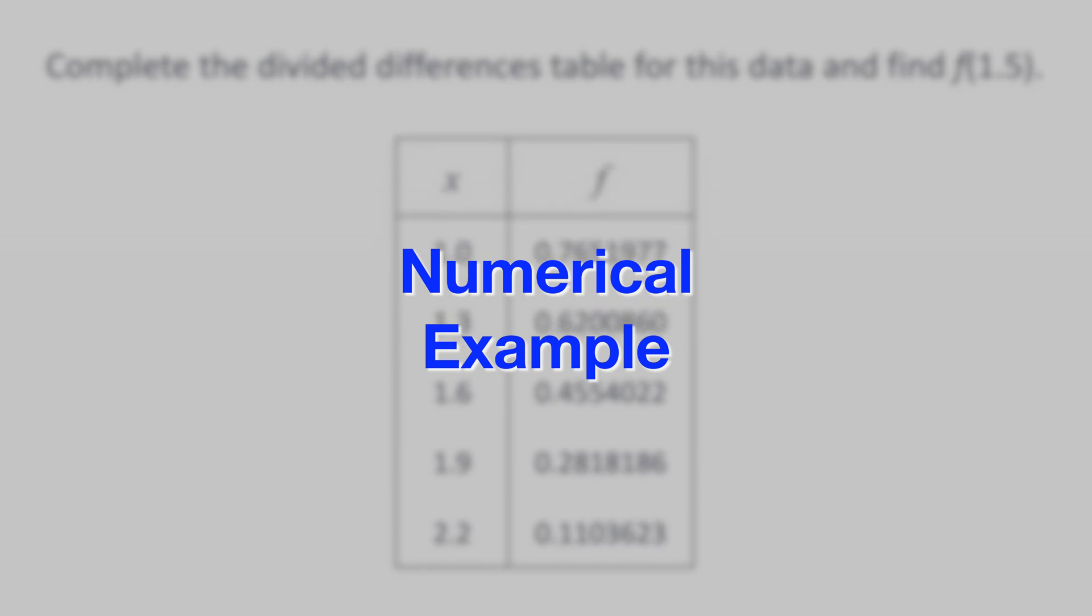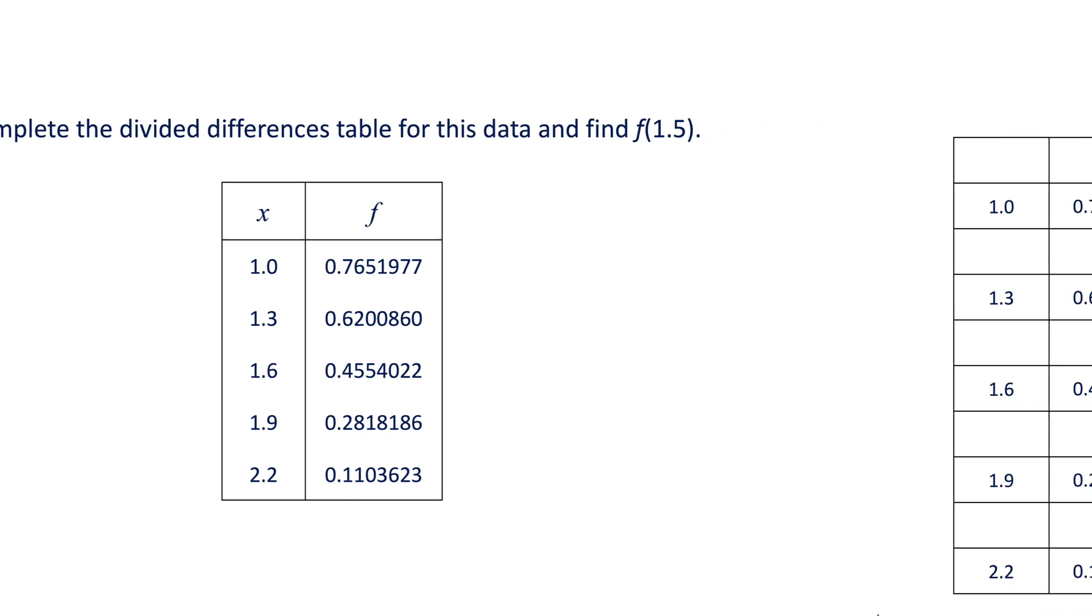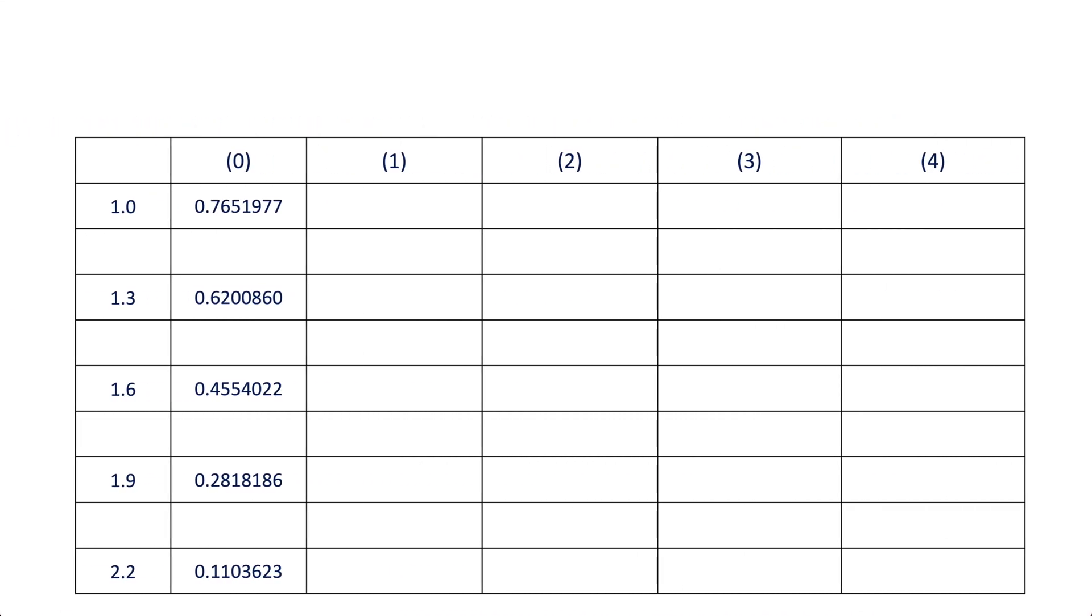In this example, we're given five values of x and corresponding f values. Since n plus one is equal to five, n will be four, which means that the largest degree of the polynomial here will be four. So we begin the solution by constructing the divided differences table. The first difference in column one will be the difference between the values corresponding to x equals 1 and x equals 1.3. Similarly, we continue with the next differences in column number one.